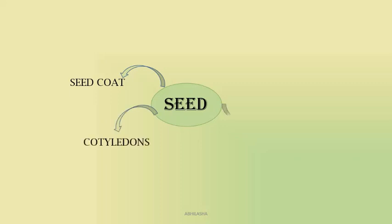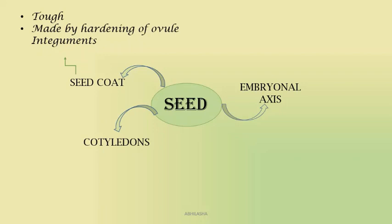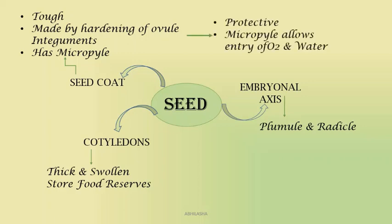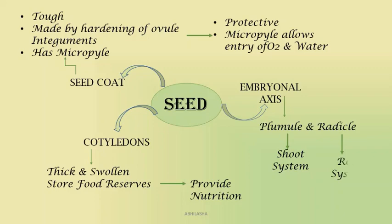The seed is the final product of sexual reproduction and has all the key players required for development of progeny. The seed has three main parts: the seed coat, cotyledons, and the embryonal axis. The seed coat is tough, made by hardening of the integuments present in the ovule, and has a micropyle. The cotyledons are thick and swollen and store food reserves. The embryonal axis comprises the plumule and the radicle. The seed coat protects the seed and its micropyle allows oxygen for respiration and water for germination. The cotyledons provide nutrition and the embryonal axis forms the new plant — the plumule gives rise to the shoot system and the radicle gives rise to the root system.